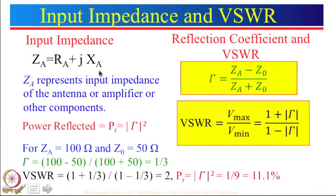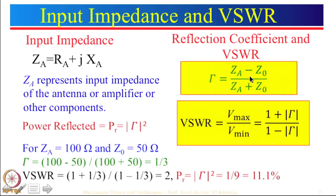First of all, how do we define input impedance? The input impedance of any particular line — or it can be of an antenna, an amplifier, or other components — can be defined in terms of real and imaginary terms. From this input impedance we can find out a reflection coefficient, which is given by Za minus Z0 divided by Za plus Z0.